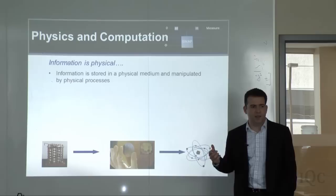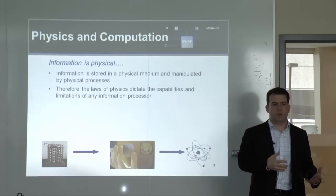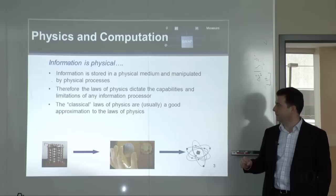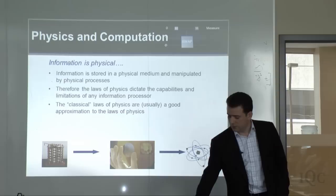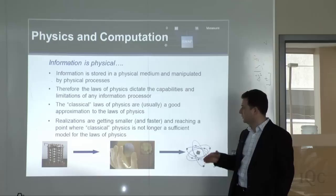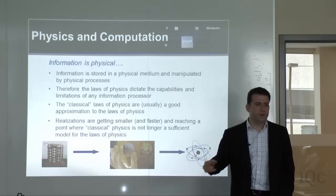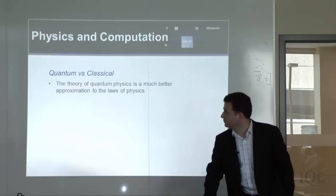There's a deep connection between information theory, information processing, and physics, because ultimately information is stored in some physical medium and manipulated by some physical process. You can't divorce any meaningful theory of information processing from the laws of physics. Classical laws of physics are a good approximation and have served us well, but as realizations of computers get smaller and faster, classical physics starts to be a bad approximation, requiring us to look at quantum theory.